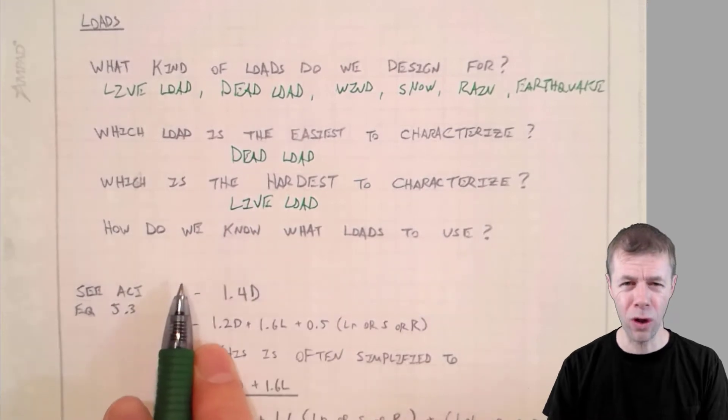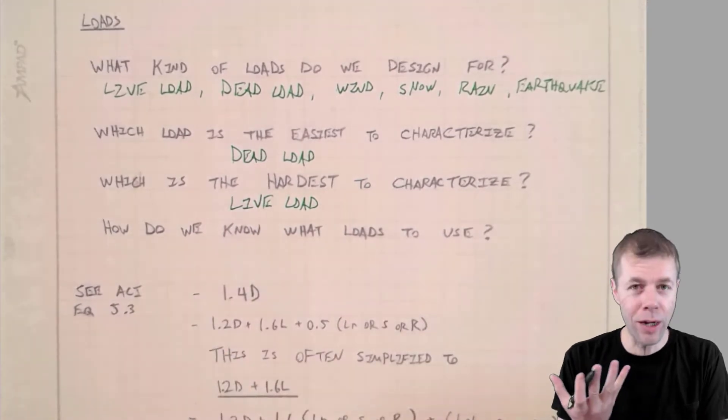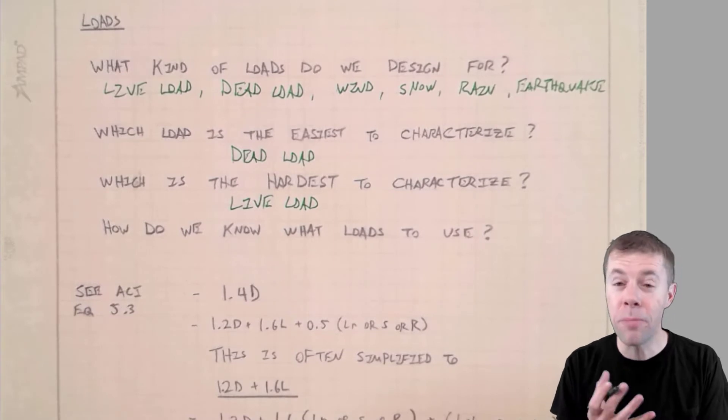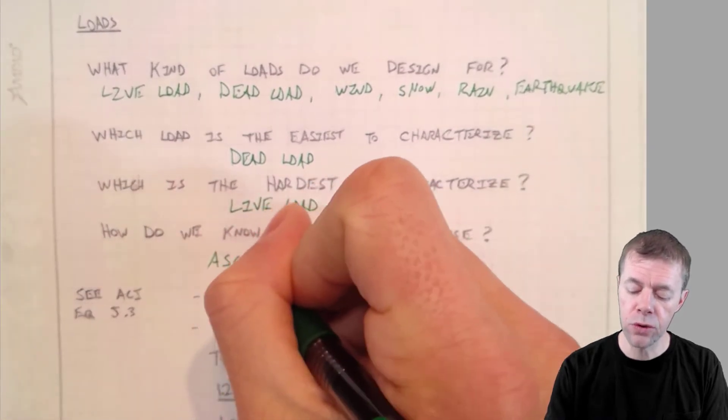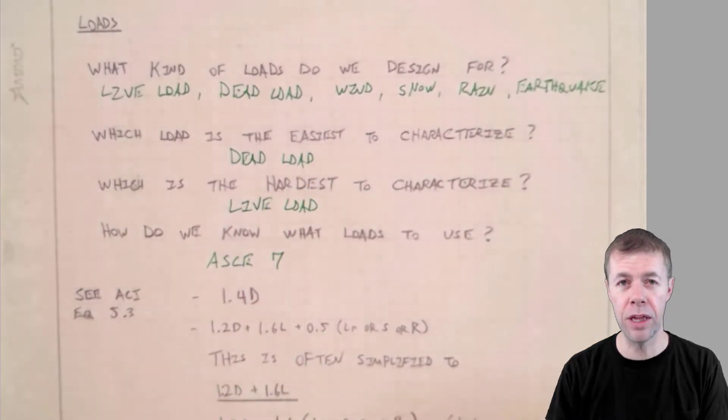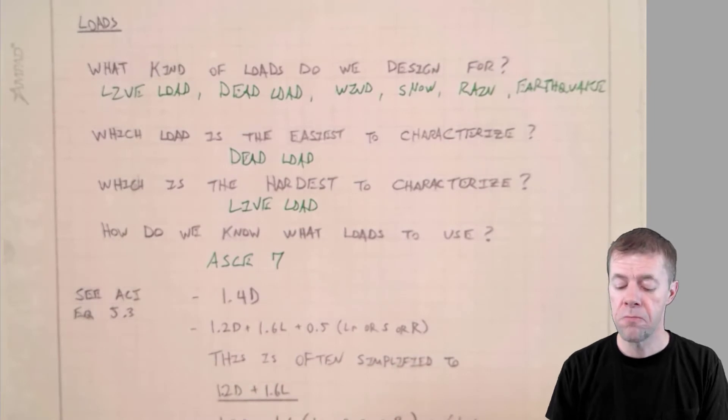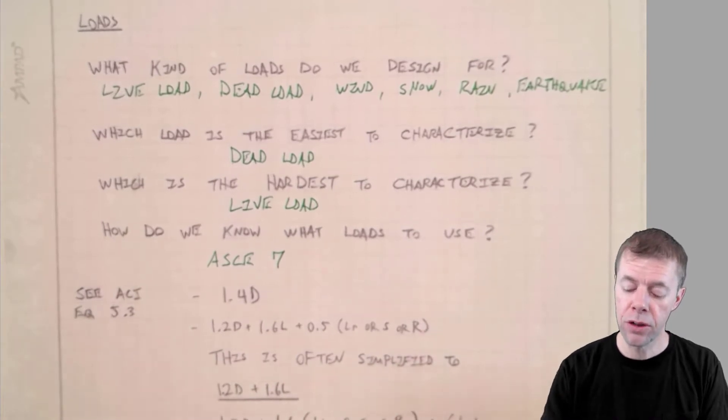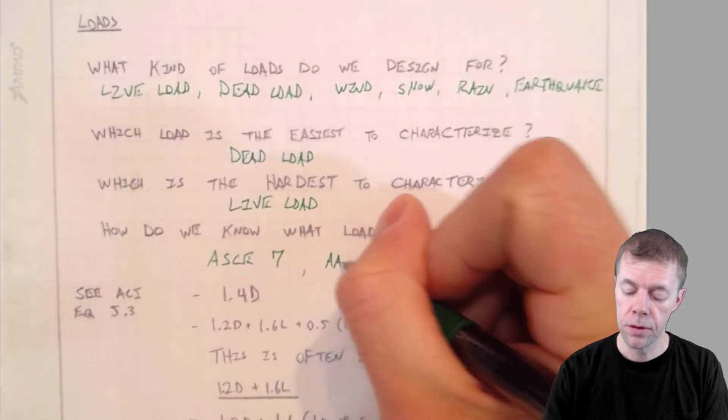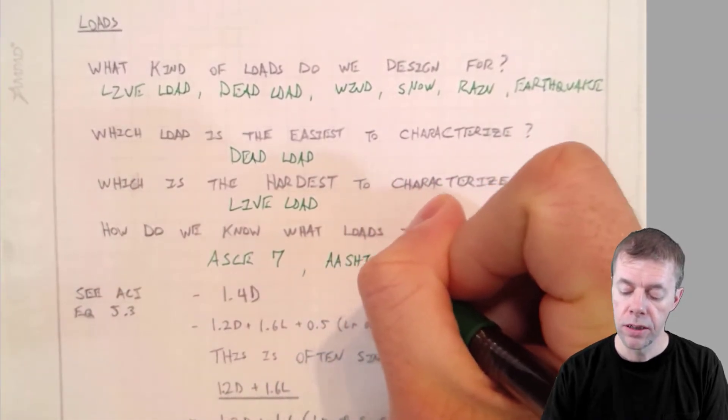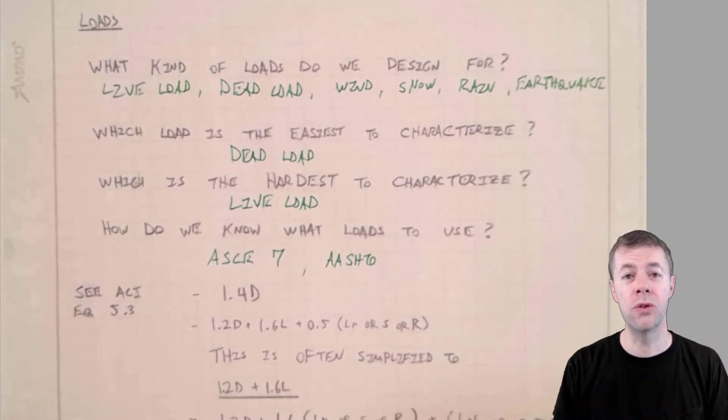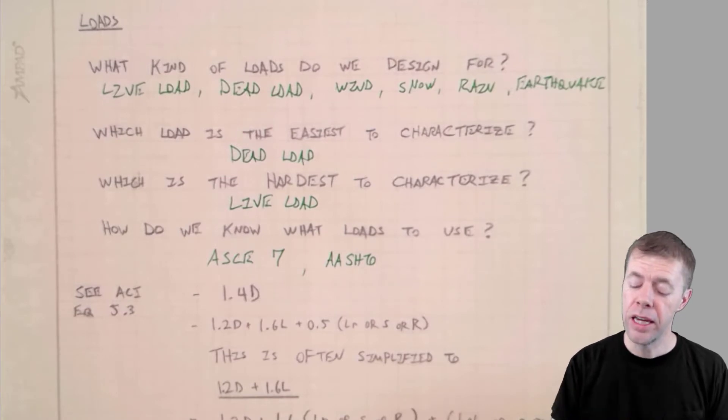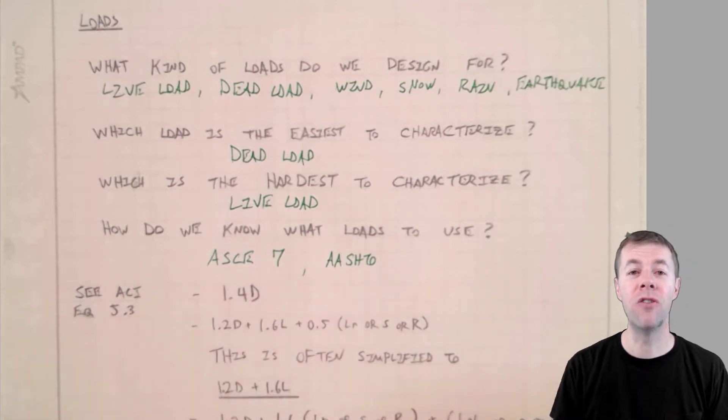So how do we know which loads to use? If I'm designing a structure, how do I know what to design it for? Well, it depends. If you're designing a building, you would commonly use something called ASCE 7 that would give you the insights. If you're designing a bridge, then you would actually use something like the AASHTO design procedure. And you may have to look at your own local building codes to help you figure out what loads they expect you to design for. But I bet it's some version or derivative of these two.